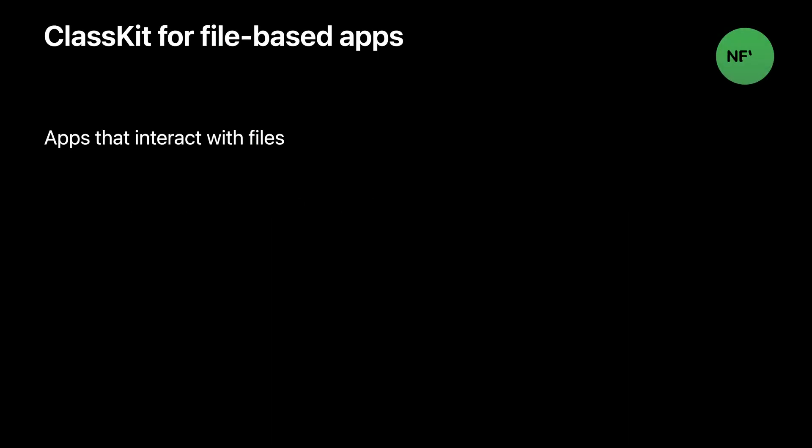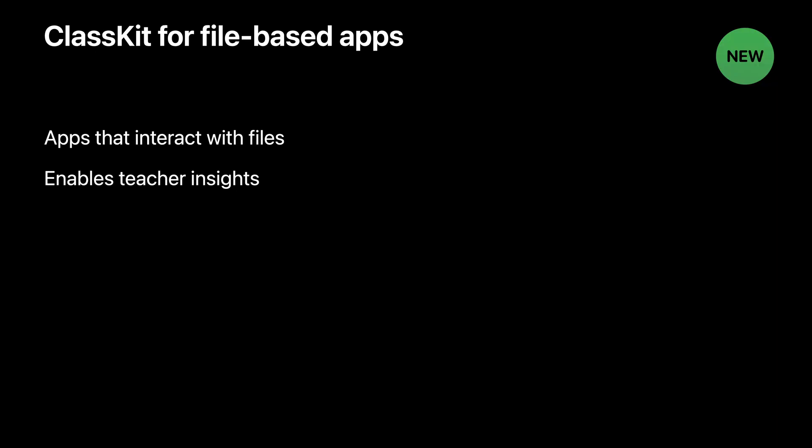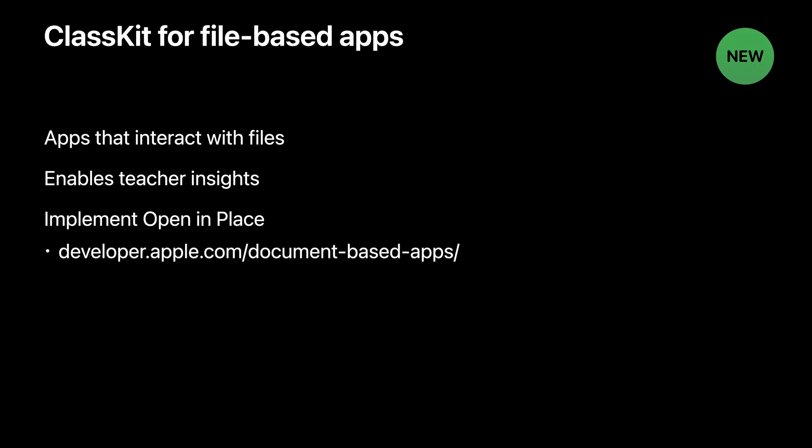If you've been holding out on ClassKit adoption because your app is file-based, we added a new API just for you. This new API is for any app that interacts with files — if you have an app that can edit files or just open and view a file, you'll love our new API. Adopting this new API enables reporting student progress data on the files used within your app when they are assigned in Schoolwork. One important thing to note is that your app must adopt OpenInPlace. When your app supports OpenInPlace, the exact file shared between the student and teacher will open in your app and not a copy.